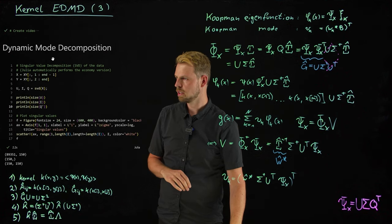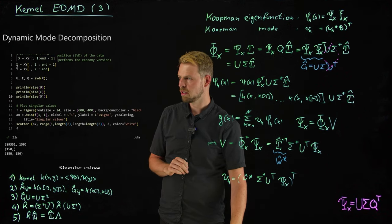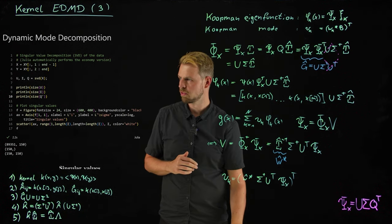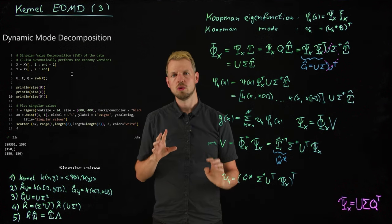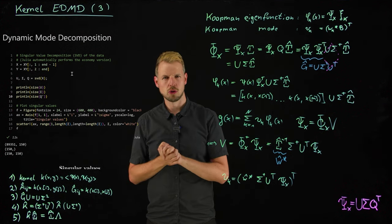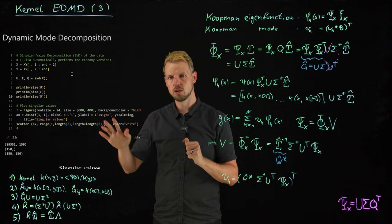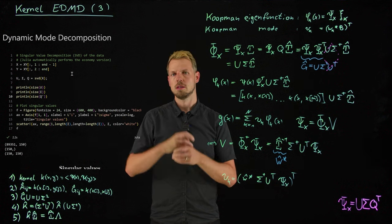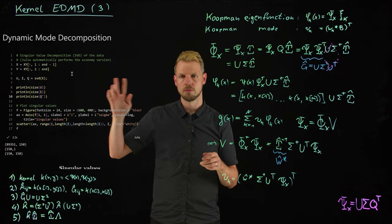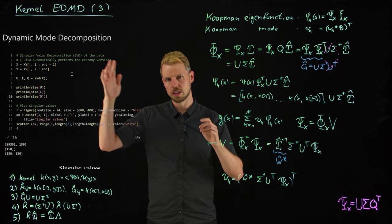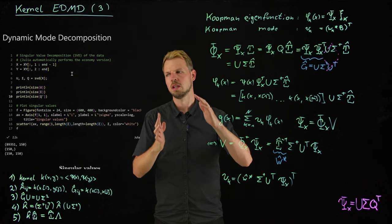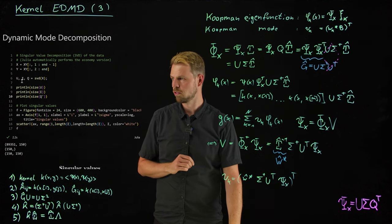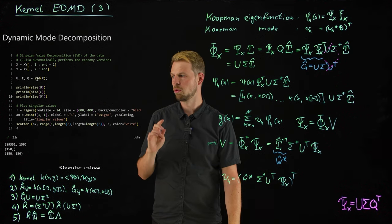You have the data matrix X, the data matrix Y is the same data basically shifted one time step to the future. And what you need to do is, you need already here, do an SVD. If you're not sure why, there is a video on the efficient computation of the dynamic mode decomposition. Because if this is 90,000 dimensional, the K matrix would already be 90,000 by 90,000. So what we have to do is, we have to restrict it to some subspace and one uses again the SVD for this. So the details don't really matter. You have this U sigma Q decomposition of the data matrix.